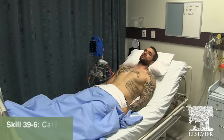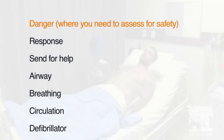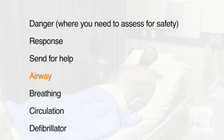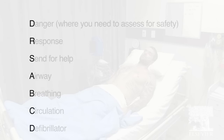When you come across a person who appears to have collapsed, you need to adopt the emergency action plan which consists of seven steps. These are: Danger, where you need to assess for safety; Response; Send for help; Airway; Breathing; Circulation; and Defibrillator. The steps can be easily remembered by the acronym DRSABCD.